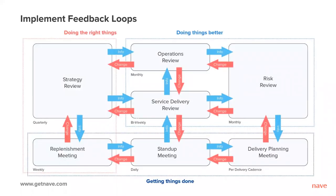Implement feedback loops. For the big picture overview, Kanban meetings are used to set direction on a daily, weekly, and long-term basis. Each meeting incorporates feedback from other meetings to make informed decisions. The Kanban method suggests seven cadences to foster communication between all parties. The purpose of these cadences can be divided into three groups: getting things done, doing the right things, and doing things better — each feeding the others with new information.